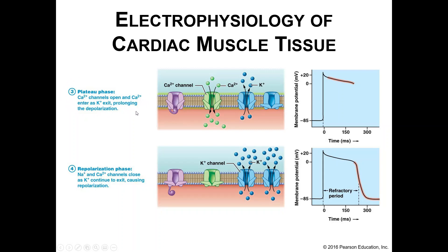We have a third channel: calcium. The sodium channel is still inactivated and closed, only a few potassium channels are open with potassium moving from inside to outside the cell, and then we open calcium channels. Calcium has a positive charge and moves from extracellular fluid to intracellular fluid. Calcium channels open and calcium enters as potassium exits, which prolongs the depolarization phase. Notice it takes much longer to get back to resting membrane potential compared to skeletal muscles.